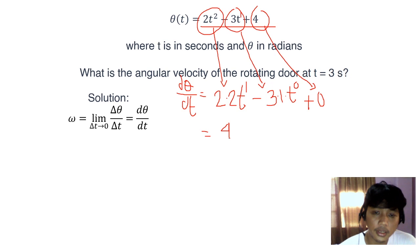2 times 2 is 4, t to the 1 is t, and 3 times 1 times t to the 0, which is also 1, is negative 3. So this is our omega as a function of time.